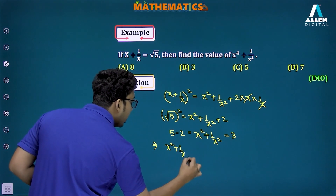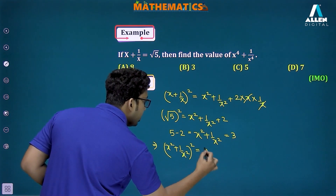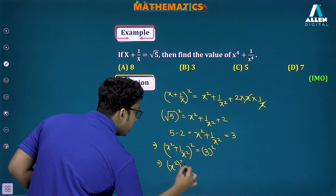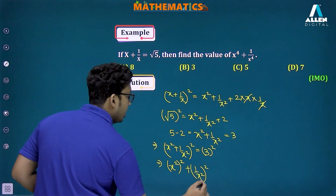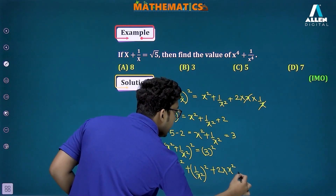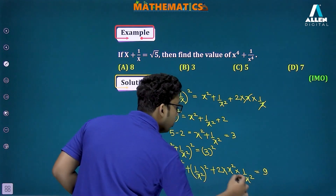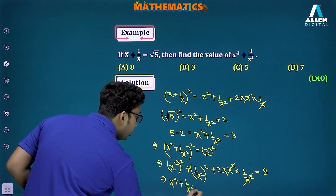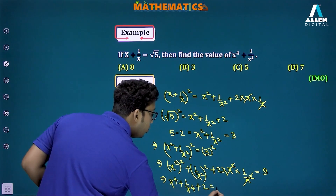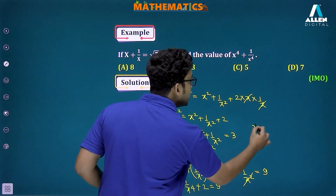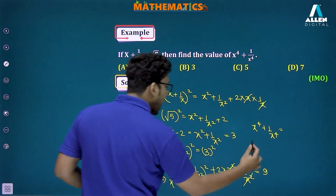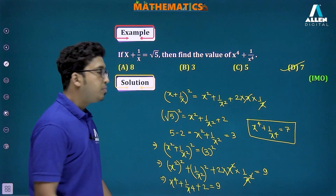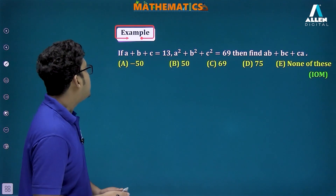(x²+1/x²)² = x⁴+1/x⁴+2·x²·(1/x²). The x² and 1/x² cancel, so 3² = x⁴+1/x⁴+2, giving 9 = x⁴+1/x⁴+2. Therefore x⁴+1/x⁴ = 7. Option D is the correct answer.